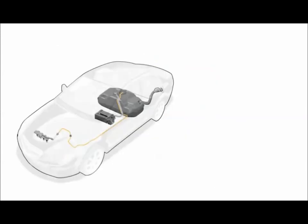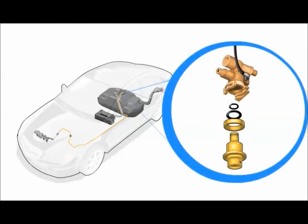On a returnless-type system, the regulator is located in the fuel tank and is part of the fuel tank unit. There is no return line between the fuel rail and the tank, which keeps the fuel cooler and reduces evaporative emissions.